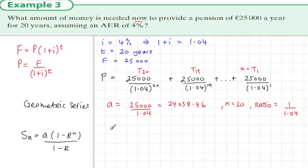So we substitute the known values into this formula. The sum of the first 20 terms is the same as the present value needed. So this is €24,038.46 times (1 - 1/1.04) all to the power of 20, divided by (1 - 1/1.04). You carefully stick these values into the calculator.